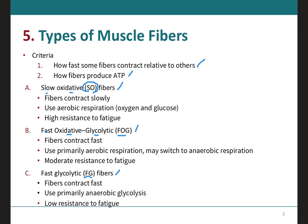If you pay attention to the names, it will tell you exactly how fast or slow these fibers contract. There's only one called the slow oxidative fibers, which will contract slowly. The other two have 'fast' in the name, so they will contract fast, especially when compared to the slow oxidative fibers. The next term — either oxidative or glycolytic — will tell you exactly how the ATP is being produced.